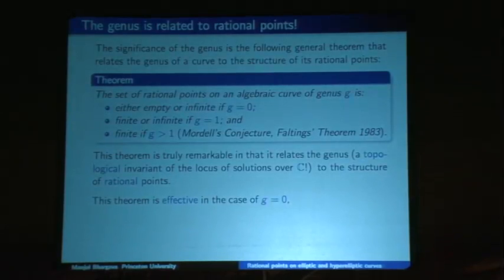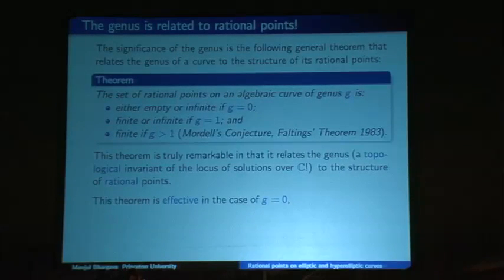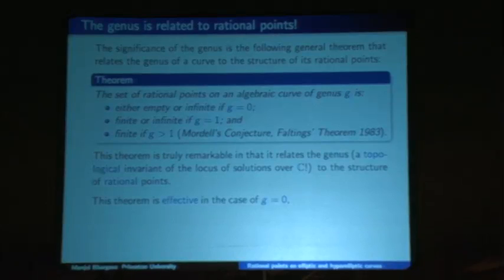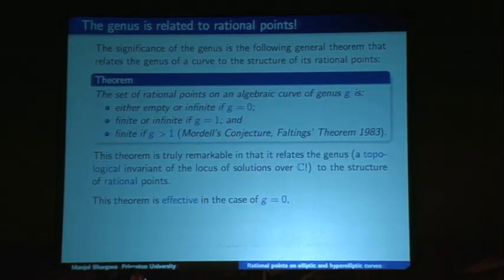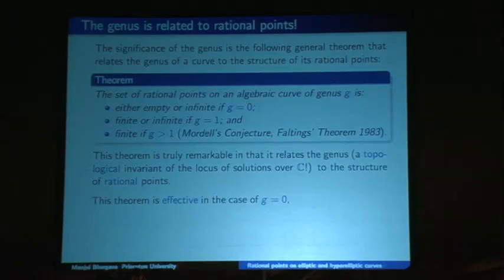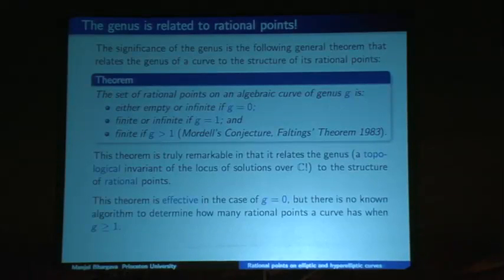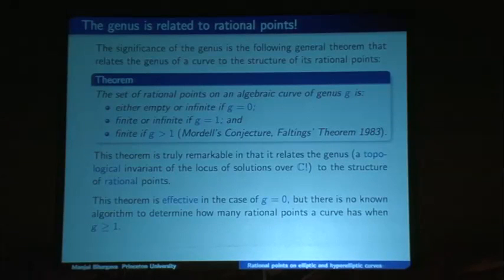This theorem is effective in the case of genus zero: if you graph an algebraic equation f(x, y) = 0 and find no holes, there is an algorithm to find all the solutions or to prove there are none. But the theorem is still ineffective for genus one and genus bigger than one — there's no known general algorithm to determine how many rational points a curve has when the genus is at least one.